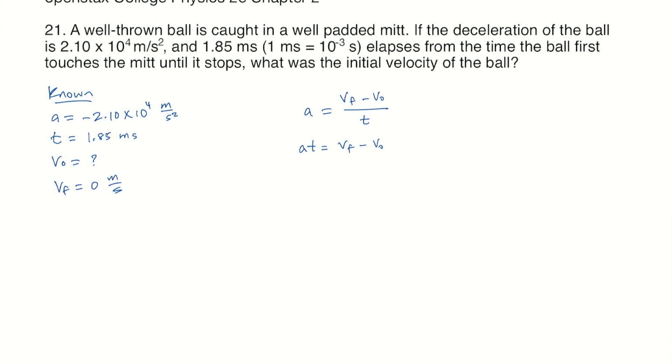Add the initial velocity to both sides, we get v naught plus a t is equal to v final. Subtract a t from both sides and we get initial velocity is final velocity minus acceleration times time.